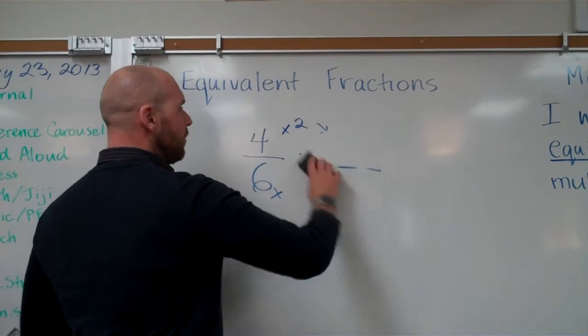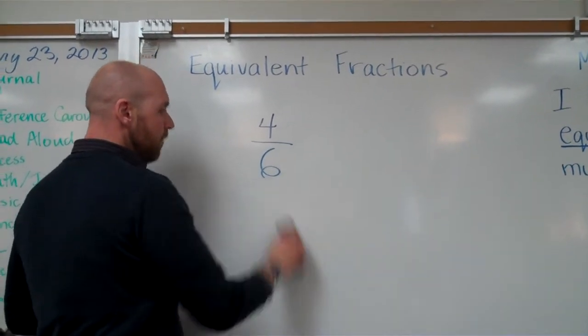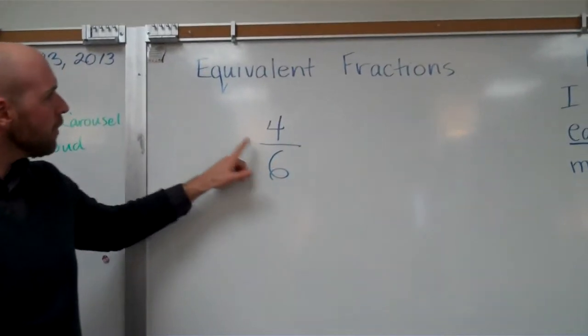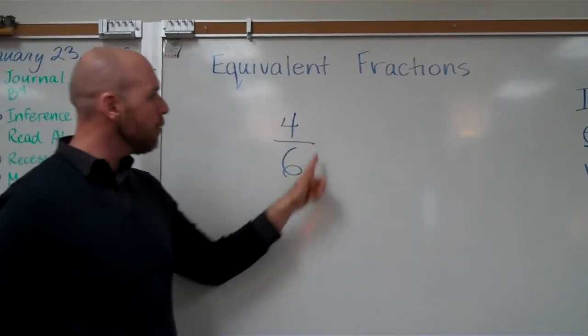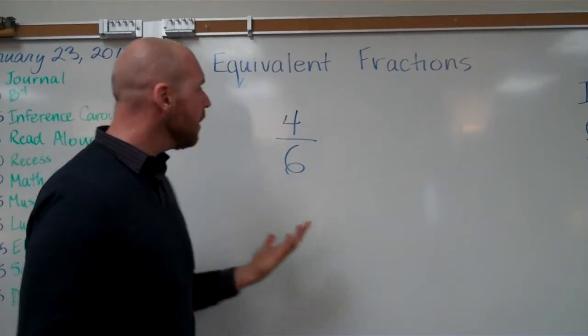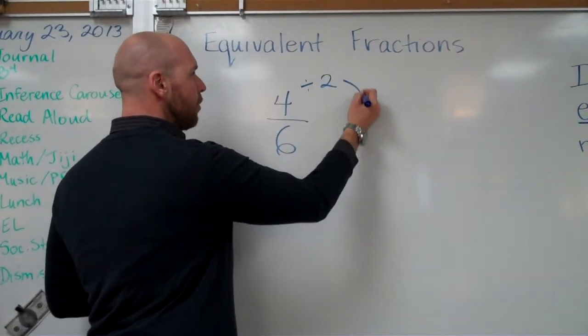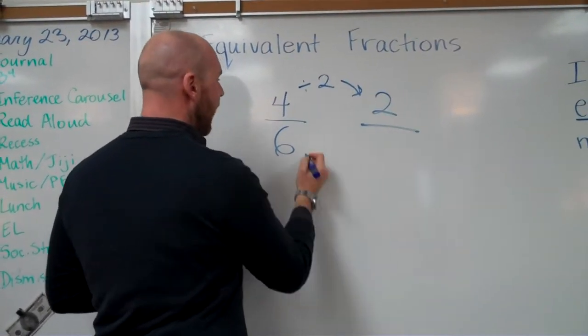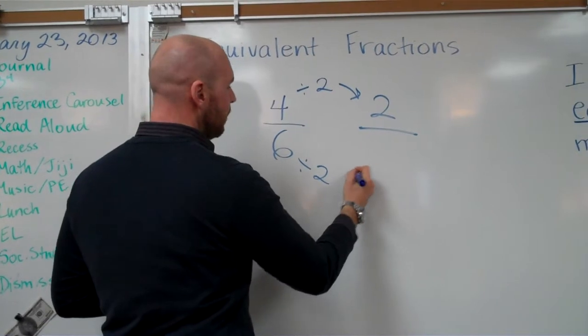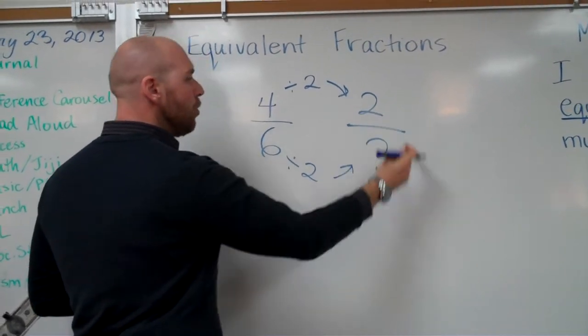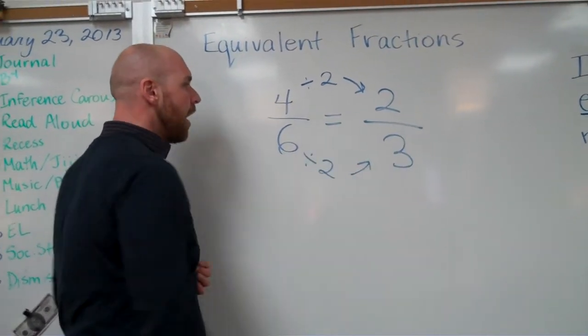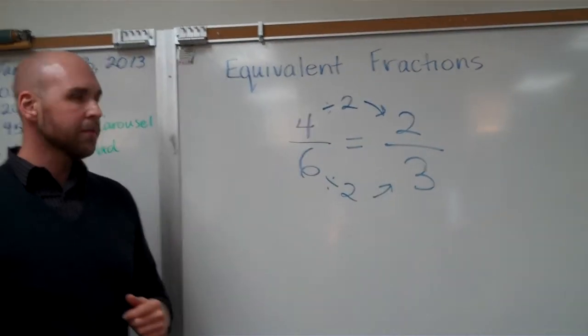But what if I want to try division? Will division work? Well, first you have to look for a number that will divide into both numbers. I see one, how about two? Two works again. So four divided by two is two, and six divided by two is three. Two-thirds is an equivalent fraction to four-sixths.